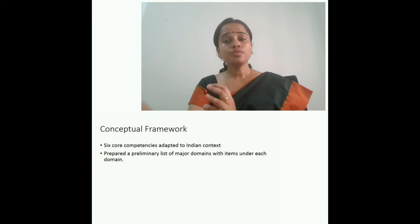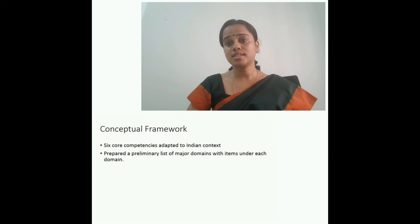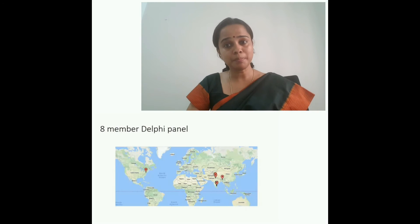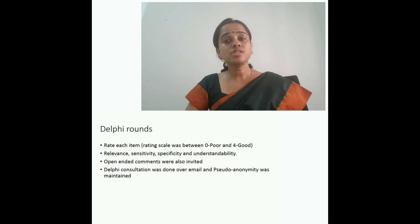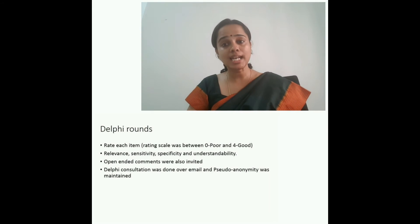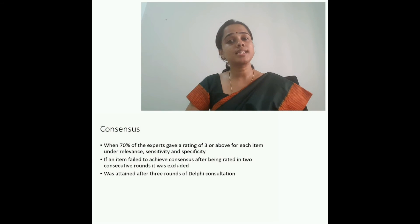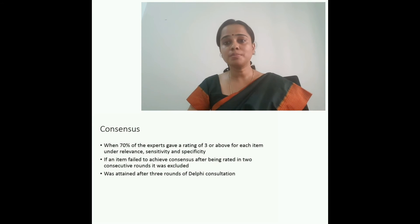We started off with a conceptual framework that had six domains and items listed under each of these. This chart was circulated to an eight-member Delphi panel constituted by experts in public health. The experts rated each item for its sensitivity, specificity, relevance, and understandability on a scale of 0 to 4. Consensus was said to be achieved when any item was given a rating of 3 or more by 70% of the experts.